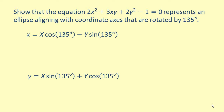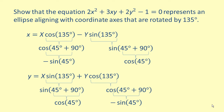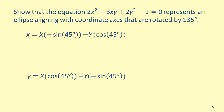Next, evaluate cosine of 135 degrees by rewriting it as cosine of the quantity 45 degrees plus 90 degrees, which equals negative sine of 45 degrees. Similarly, evaluate sine of 135 degrees by rewriting it as sine of the quantity 45 degrees plus 90 degrees, which equals cosine of 45 degrees. Since both sine of 45 degrees and cosine of 45 degrees equal the square root of 2 over 2, they can be factored out as a common factor. Thus, we simplify to x equals the square root of 2 over 2 times the quantity capital X minus capital Y.